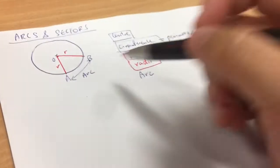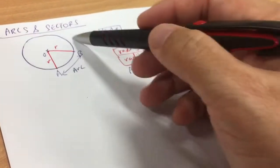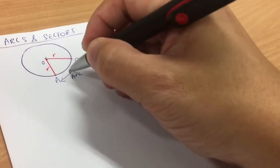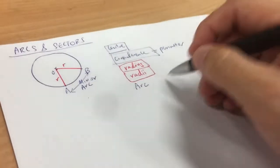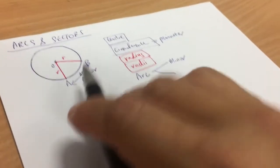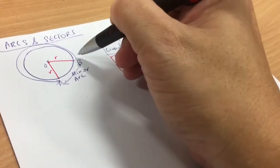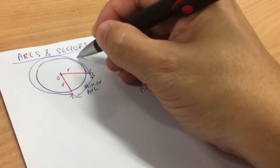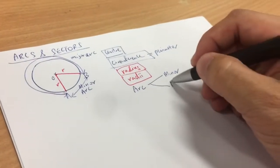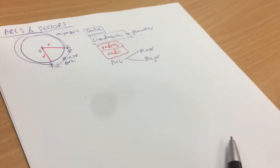Continuing — so this is an arc, a part of the circumference of a circle. This small little bit has a name: it's called the minor arc. So make an intelligent guess — what is the big part called? The big part will be called the major arc. So an arc can be split into minor and major.